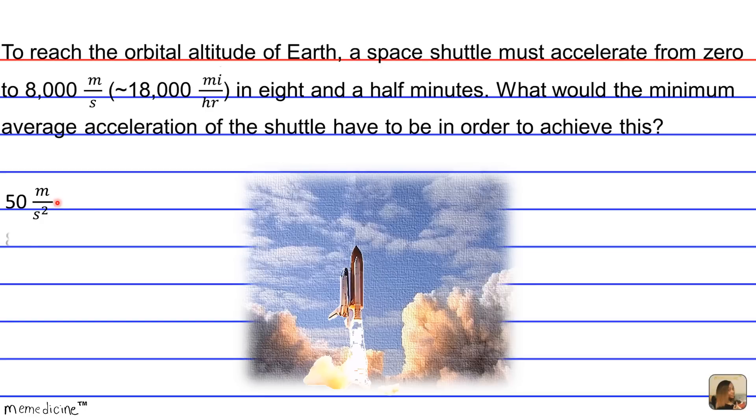Would it be A, 50 meters per second; B, 8 meters per second; C, 30 meters per second; or D, 15 meters per second? I'll give you a moment to think and select the correct kinematics formula to solve for the answer.